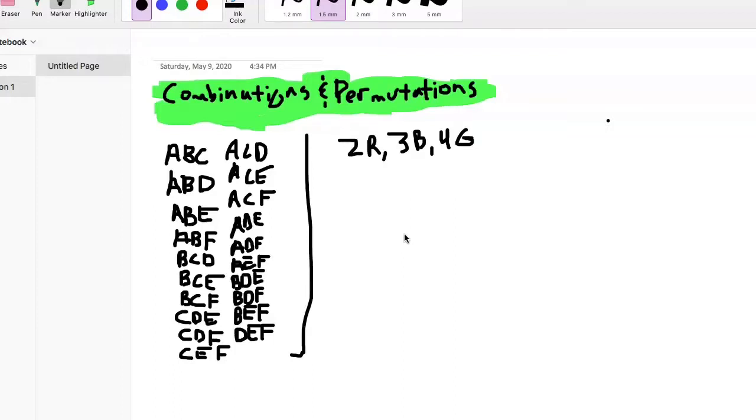Okay, so you see where it says 2R 3B 4G. In this case it would be a combination: you have two red hats, three blue shirts, and four green pair of pants. How many different combinations are there of all these different clothing items? When you have something like this, that's strictly a combination question.